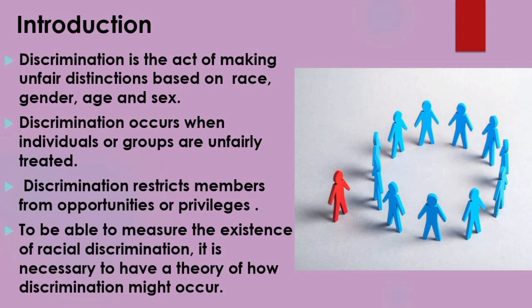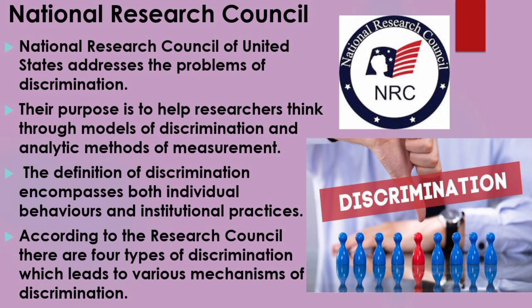To measure the existence of racial discrimination, it is necessary to have a theory of how discrimination might occur. The National Research Council of the United States addresses the problems of discrimination and provides insight into its conceptualization. Their purpose is to help researchers think through models of discrimination and analytic methods of measurement. The definition of discrimination encompasses both individual behaviors and institutional practices. According to the Research Council, there are four types of discrimination, each leading to various mechanisms.